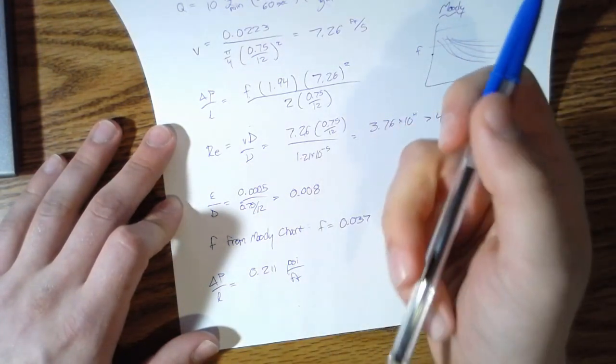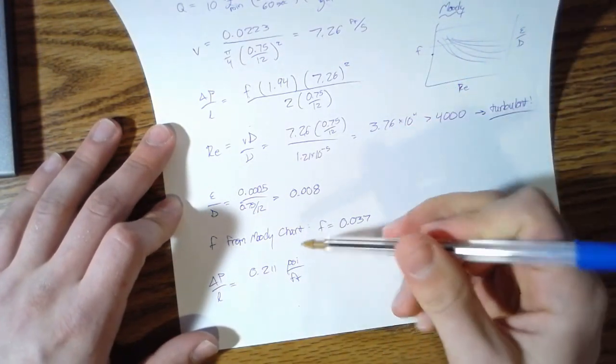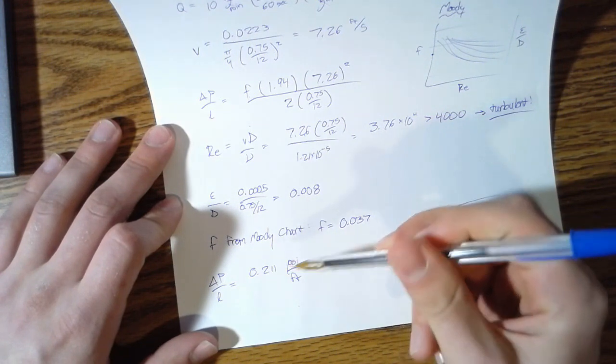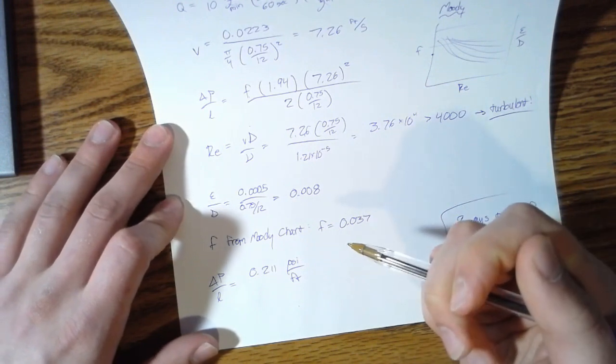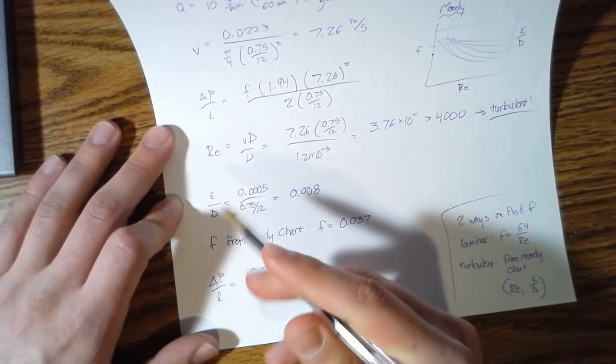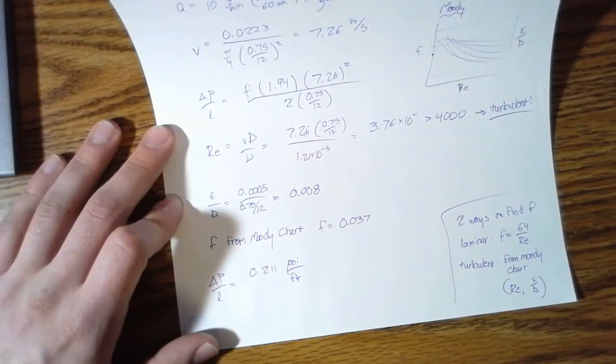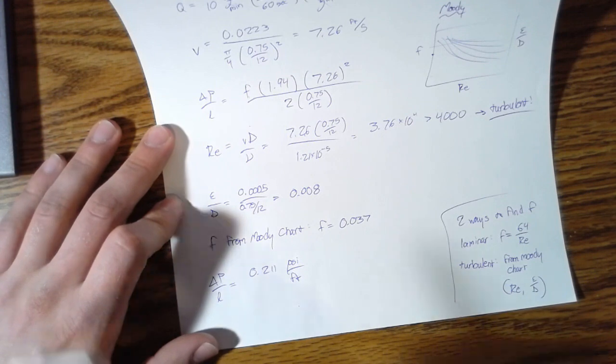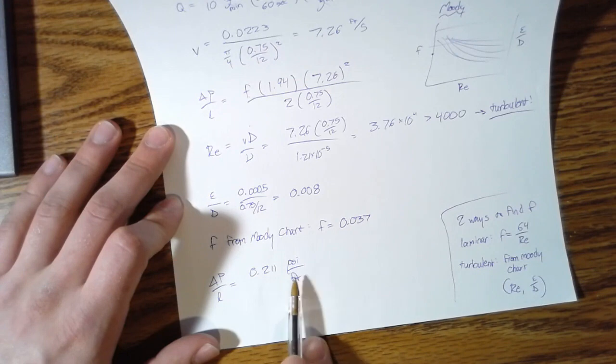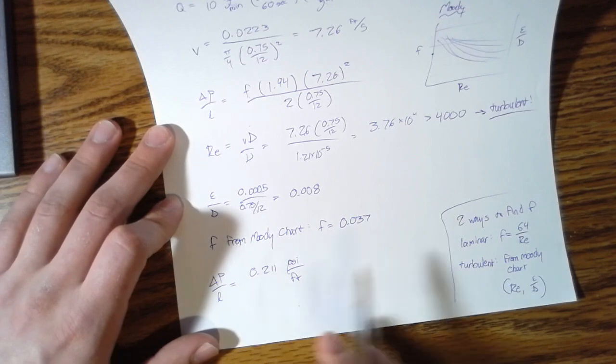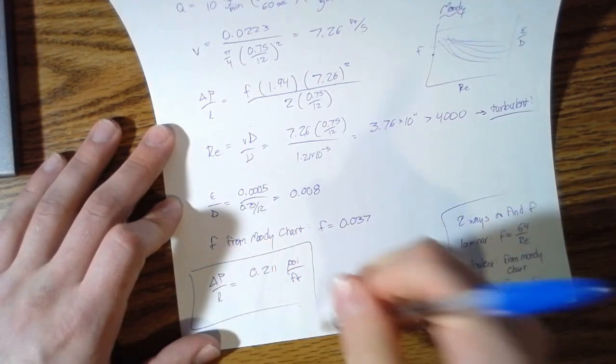One thing that would be tempting in this problem or one thing you might do is not have this in pounds per inches squared, but have this in pounds per foot cubed or something like that. But remember, this is a ratio of two different properties in your pipe—the pressure in the pipe and the length of the pipe—so you want to keep these units separate. PSI is a typical pressure unit, feet is your typical length unit, so we keep it in psi per foot.